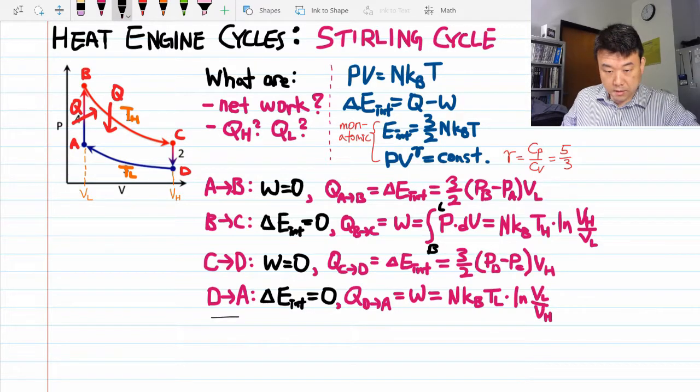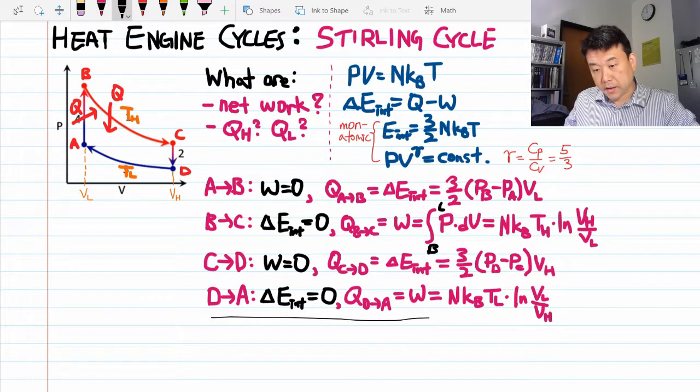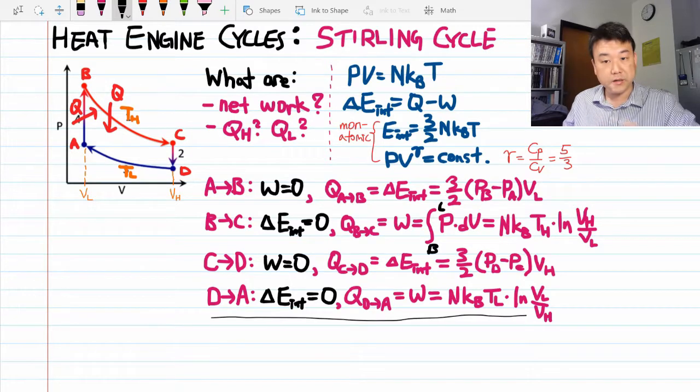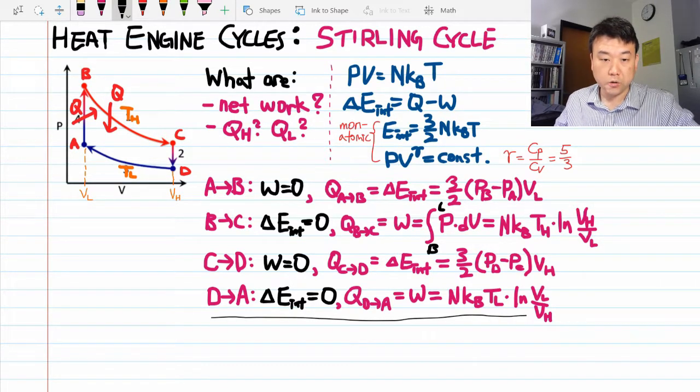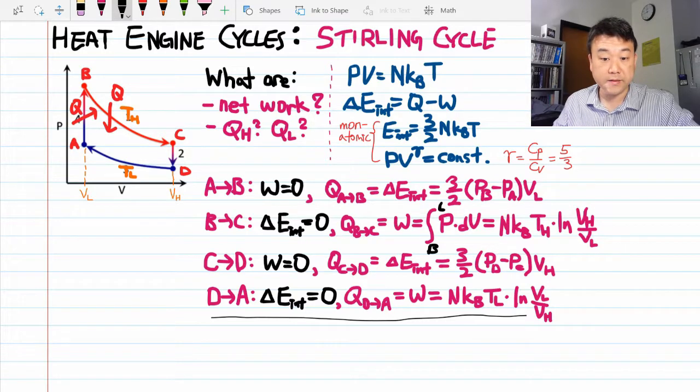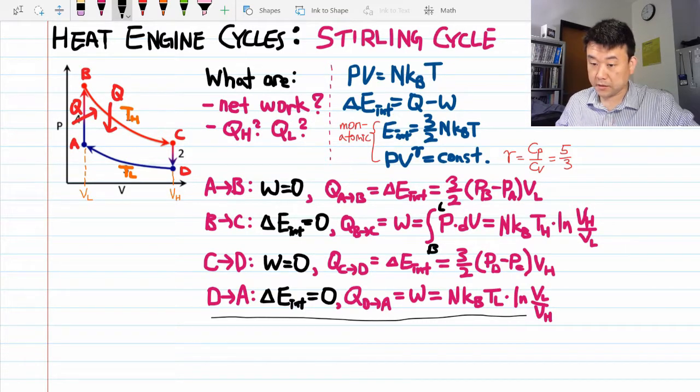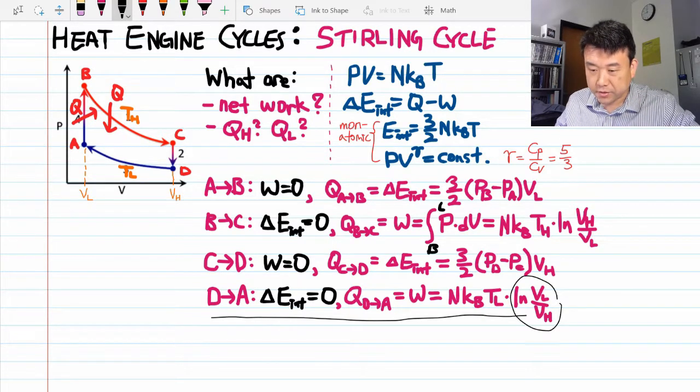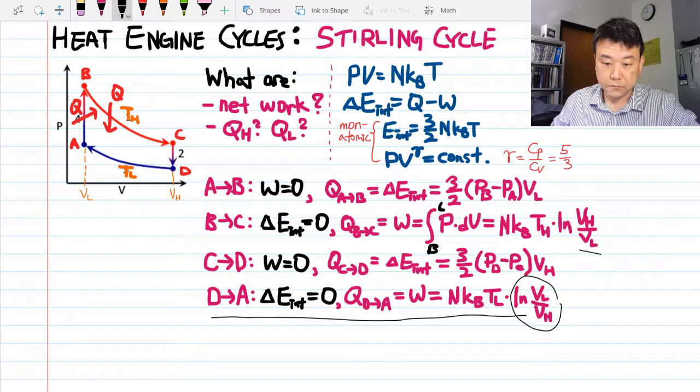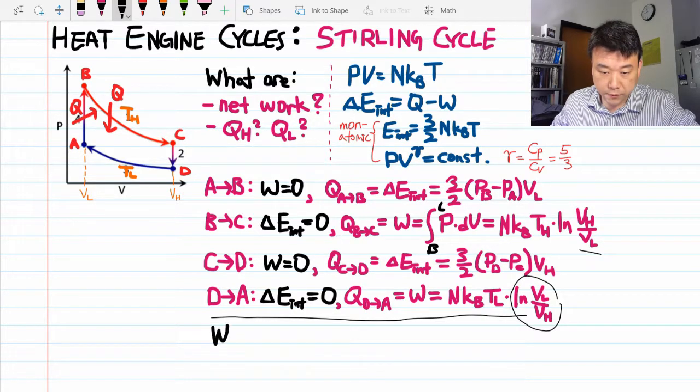Alright, that's it. Let's write down the network and heat transfers and see what we can get from that. So work is only done along the curves BC and DA. So adding those two together, I'm going to use the logarithm algebra to turn this into the same thing as this. You get the following result for network.